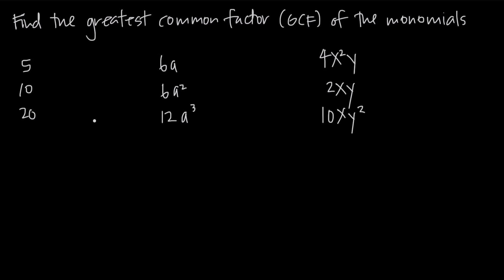Let's go ahead and clarify a few terms here. Monomial, remember, means just one number — mono meaning one, and nomial meaning number, so monomial is one number. So 5 is one number, 10 is one number, 20 is one number, so these are three monomials. And we've been asked to find the greatest common factor among these three monomials. The greatest common factor is going to be the largest number of factors that divide evenly into all three of our monomials.